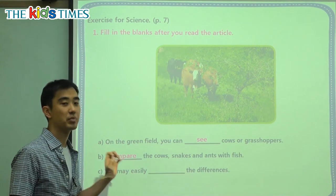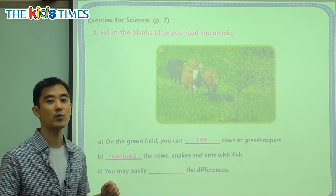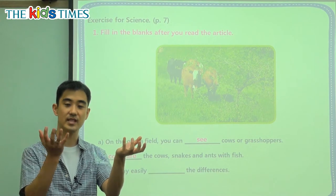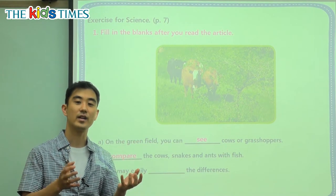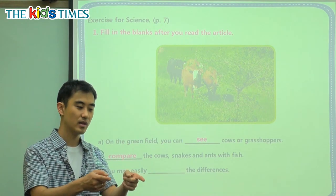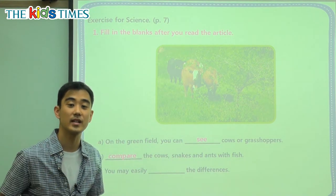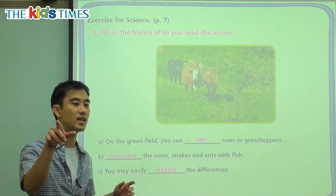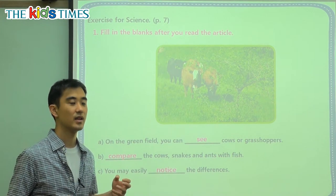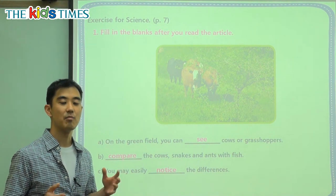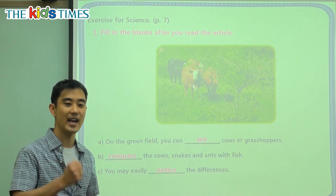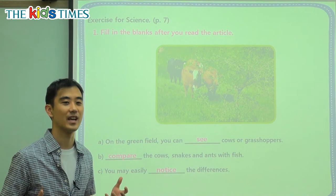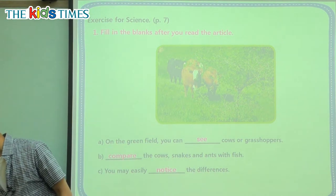Next one: you can easily blank the differences. So when we see the apple and the banana, when we see the cow and the fish, we can see what is different very easily. Another way to say that is to notice. To notice something is to see or to be aware of something. So when we notice our mom is angry, she doesn't say 'I am angry' — we just kind of see that she's a little bit sad or angry and we notice that.